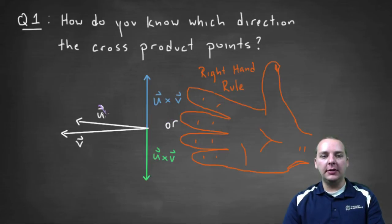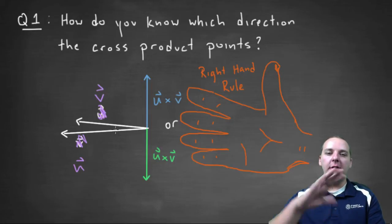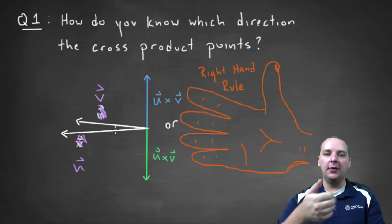Now if we rearrange these, and if I called this vector u, and I called this vector v, then how would you have to orient your hand so that your fingers would start at u and end at v?